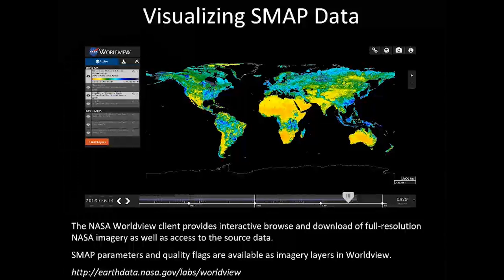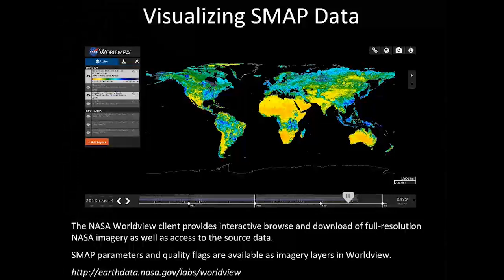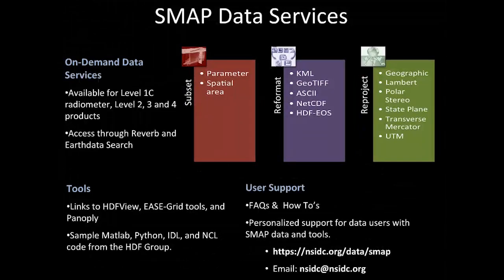The feedback you provide applies directly to how SMAP organizes and distributes its data. The DACs have a number of data services and tools — you can download the product in its native HDF5 format, or convert it on the fly to GeoTIFF or KMZ, which depending on your use may be more beneficial.